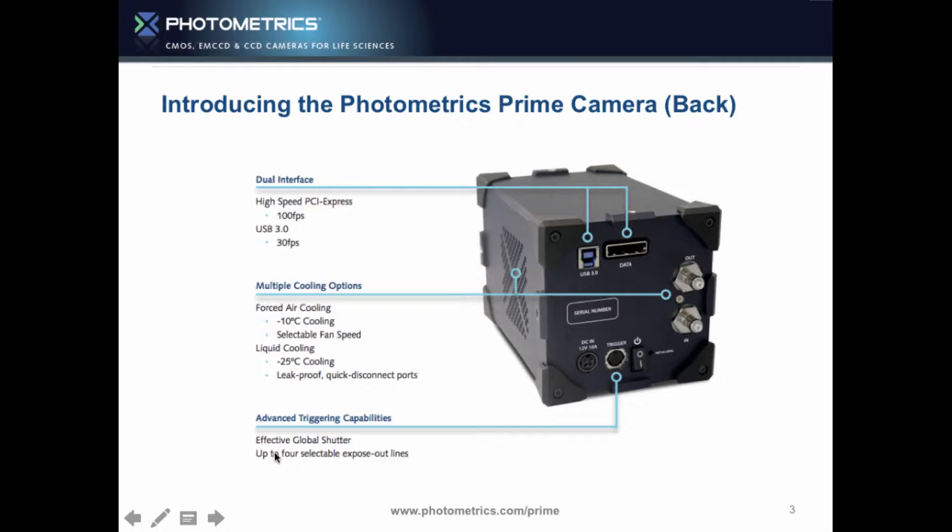We have some great shutters. We have an effective global shutter, and we also have the ability to send four exposures out. So if you want to do something like high-speed channel switching, then you can do it with this camera without having to do anything fancy like national instruments boards or splitting signals.